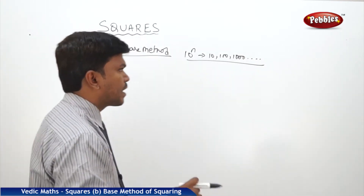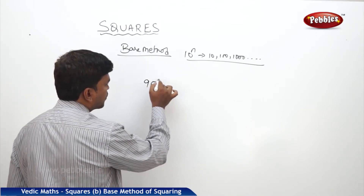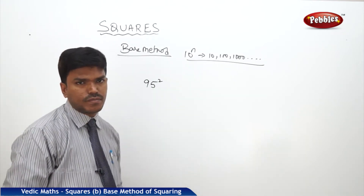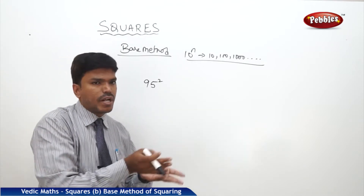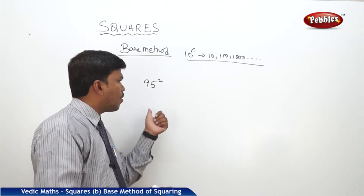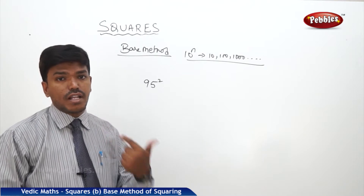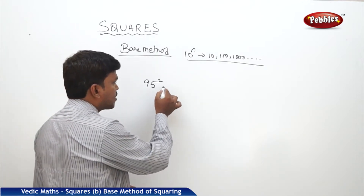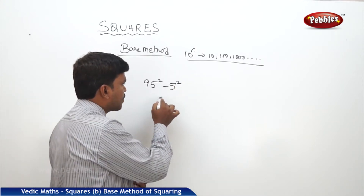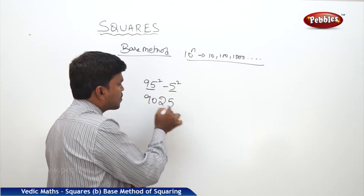Let us take an example. I need 95 square. If I compare 95 with the base 100, 95 is closer to 100, so we have to take the base as 100. Now check: how much is 95 more or less than the base? It is less by 5, so put minus 5. What is 5 square? 25 — write 25 here. Now 95 minus 5 is 90. So your answer is 9025.